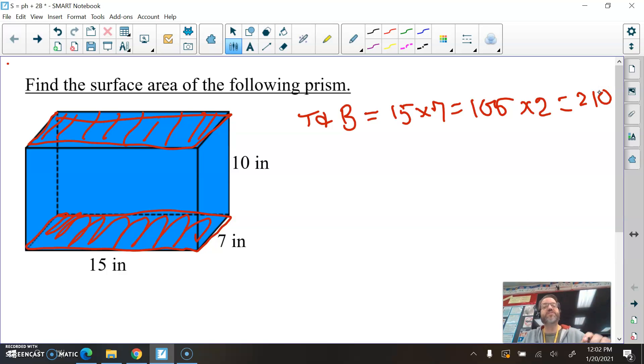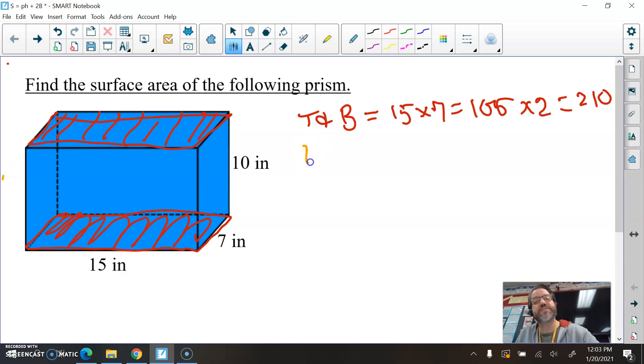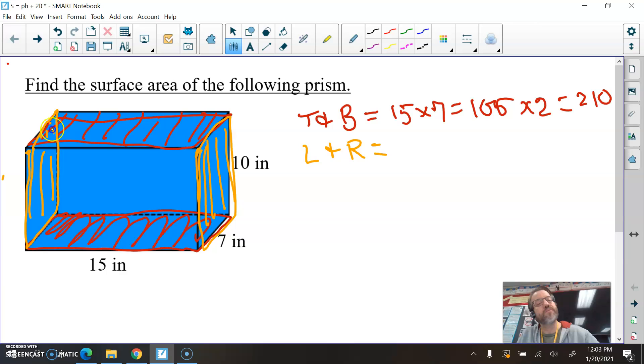Now, let's switch colors here. I'm going to switch to orange. So let's look at the left and the right sides. Here's the right side here. I'll just shade it orange. We have the left side over here, which is identical to it. And I'll shade that in also. And those are 10 by 7, 10 inches by 7 inches. Well, 10 times 7 is 70. And since both the left and right are the same, we can double that to get the two combined. And that would be 140.